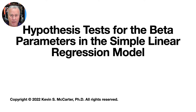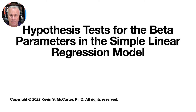Now that we have obtained estimators of the variances and standard errors of the beta parameters in the simple linear regression model, calculated the studentized versions of those estimators, and determined their sampling distributions, we have everything we need to develop inference procedures for the beta parameters. In this video, we look at procedures for testing hypotheses about the slope coefficient and also about the intercept.